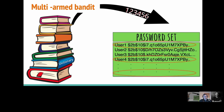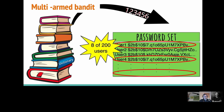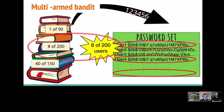In doing that, we learn something about the people in the dataset. So maybe we find, going through and trying to crack all those hashes, that eight of the 200 users in our password set used '123456'. Well, that tells us something about the demographics of the people using the password set. And we can look at the demographics of the dictionaries we've collected — perhaps in one dictionary only one of 90 people used it, in another eight of 200 used it, and in another 40 of 150 used it.